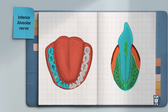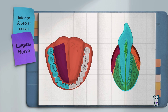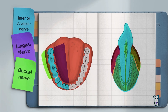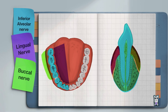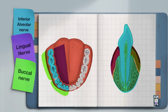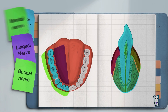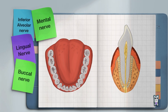The nerves that innervate the lower jaw are: the inferior alveolar, which creates the dental plexus; the lingual nerve, which innervates the lingual gingiva; the buccal nerve, which innervates the vestibular gingiva in the posterior region of the mandible; and the mental nerve, a branch of the inferior alveolar nerve, which innervates the vestibular gingiva in the anterior region of the mandible.